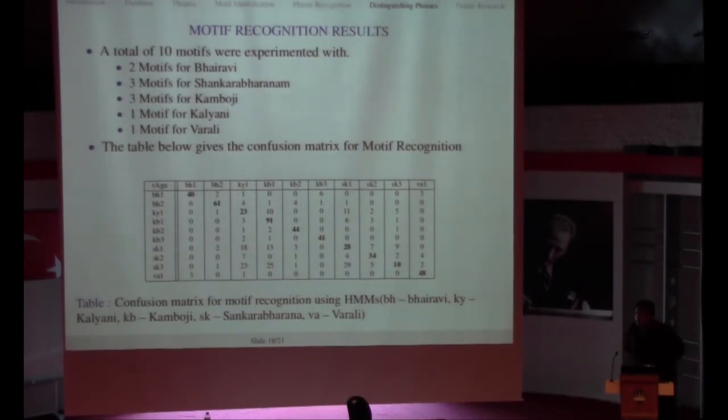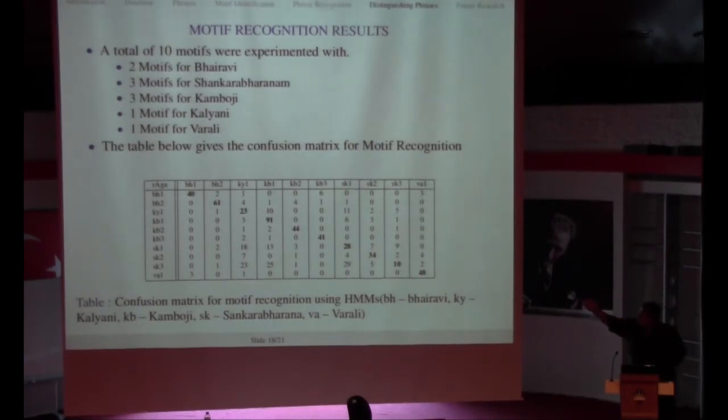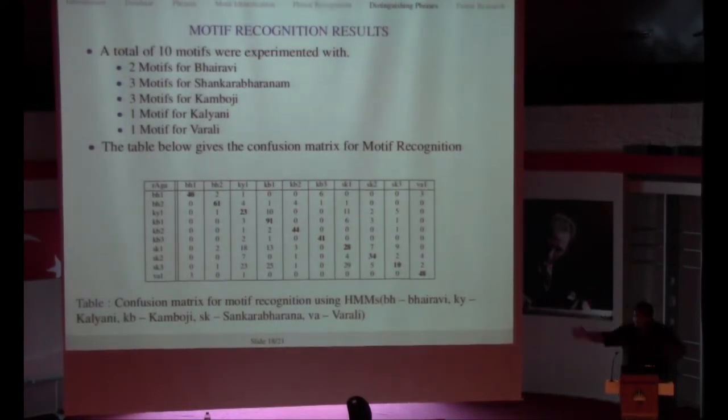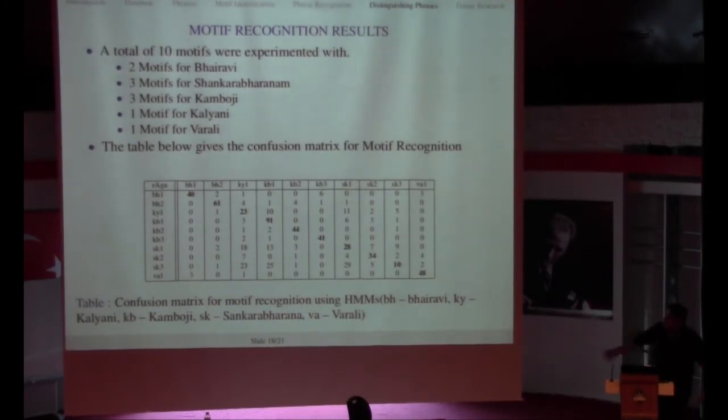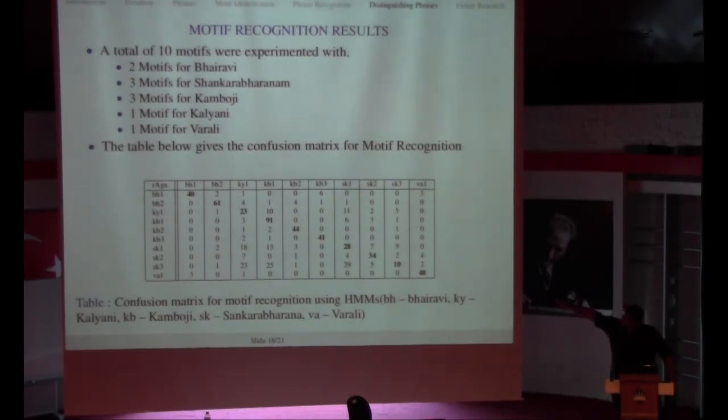The results we got were also pretty interesting. A total of 10 motifs were experimented on: 2 motifs for Bhairavi, 3 motifs for Shankarabharanam, 3 motifs for Kambhoji, 1 motif for Kalyani and 1 for Varali. I chose Varali because I wanted to see a Raga that has a number of occurrences of a single phrase many times even though the Raga is not sung as much in the database. So I chose Varali to see a Raga outside the big six. The table below gives the confusion matrix for the results observed.